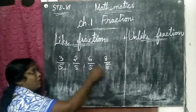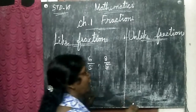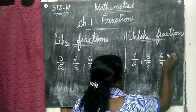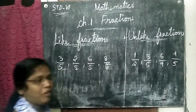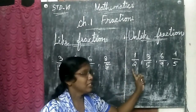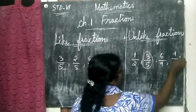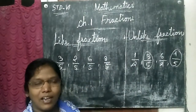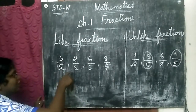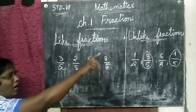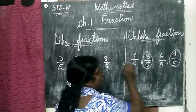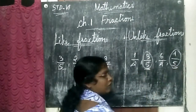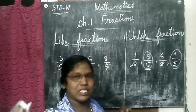Like fraction means the denominators will be same and the numerator may be different. But in unlike fractions, their denominators differ. For example, these two are like fractions because both have denominator five and five. But two by something and nine by something are not like fractions — they are unlike fractions.